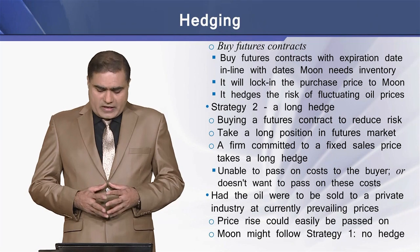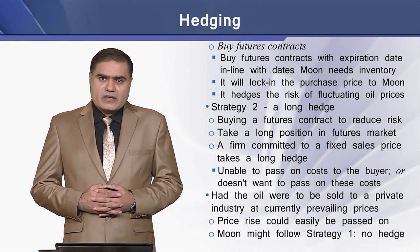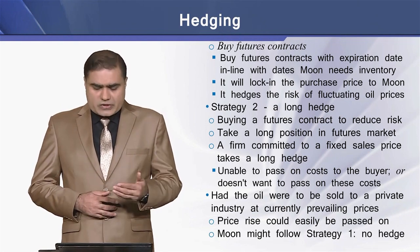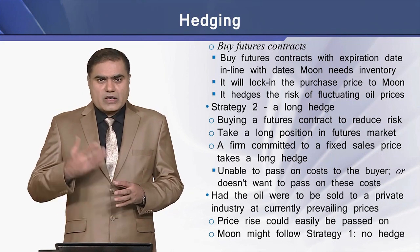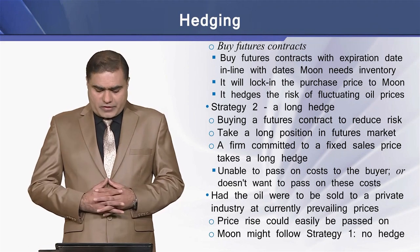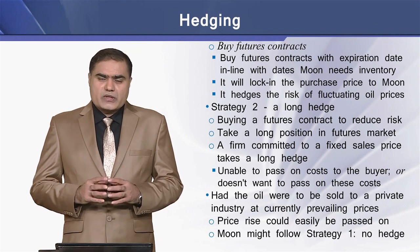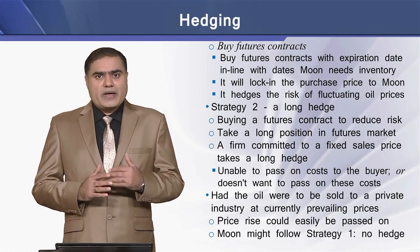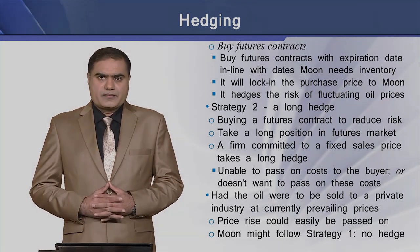Now, assume that the oil were to be sold to a private industry rather than the US government at the current prevailing prices in the future. Then a price rise could easily be passed on to the buyer as it rises. In that particular case, Moon might follow strategy one — that is, Moon might not go for the hedge, but rather take an unhedged position.